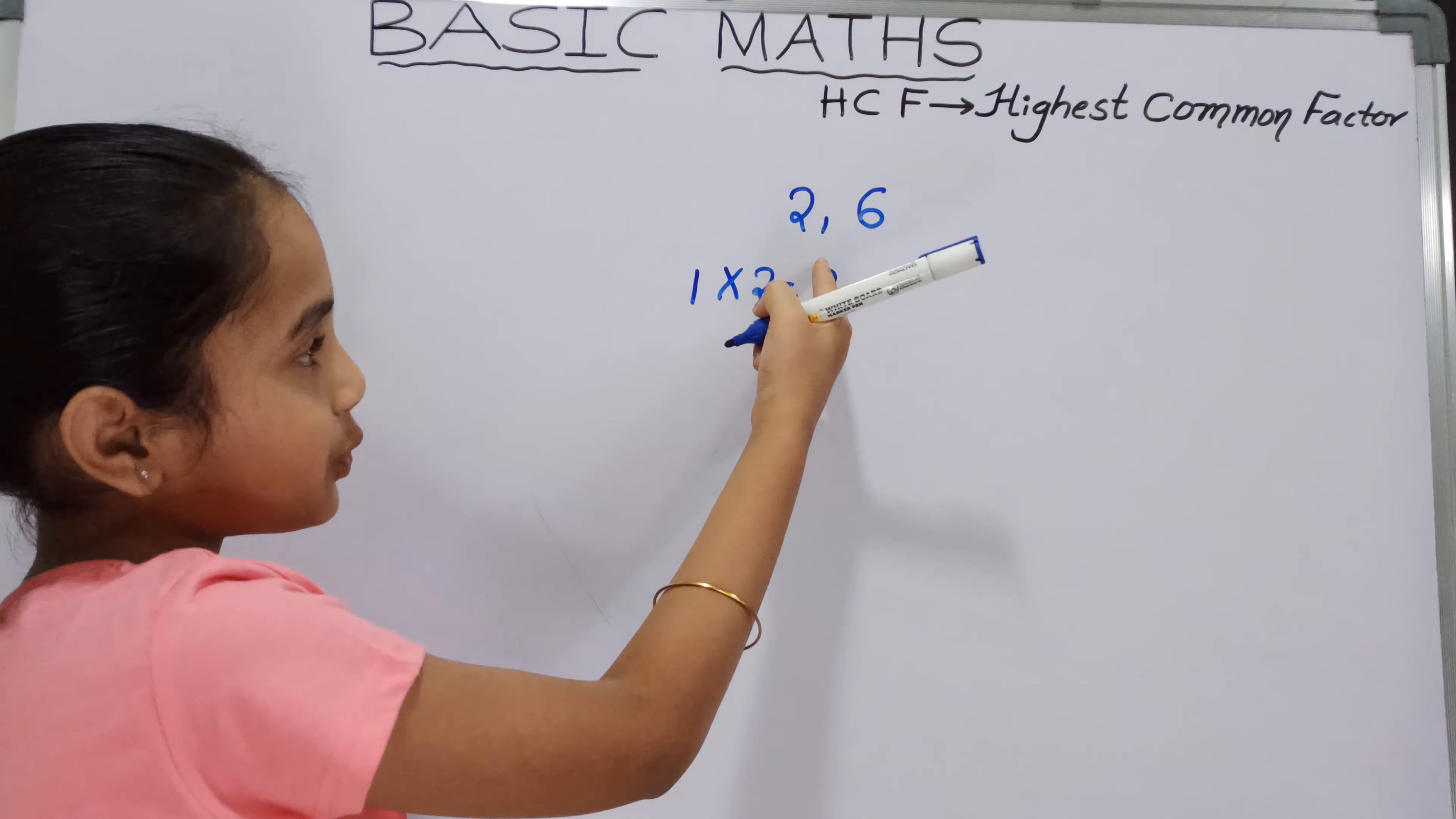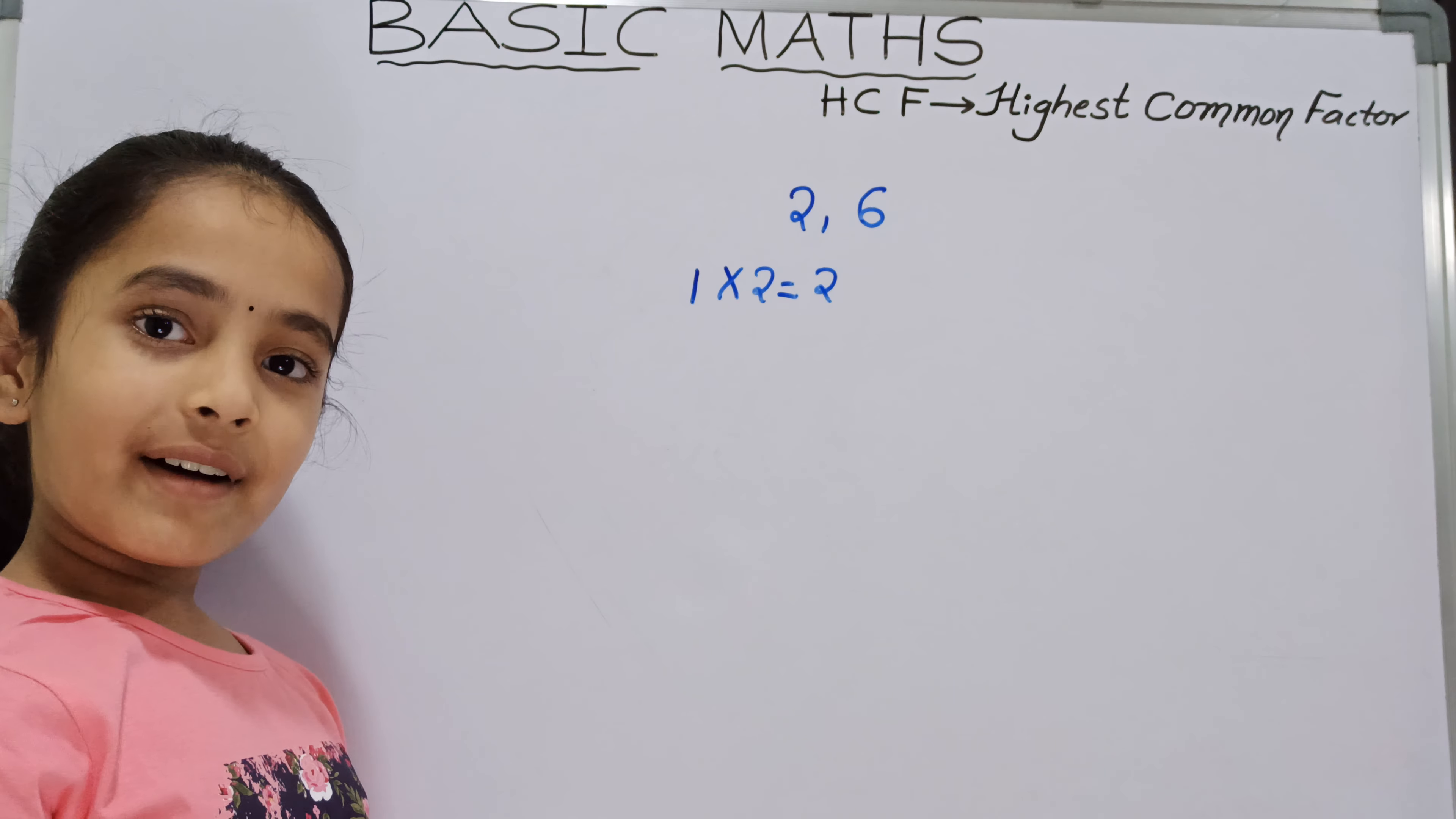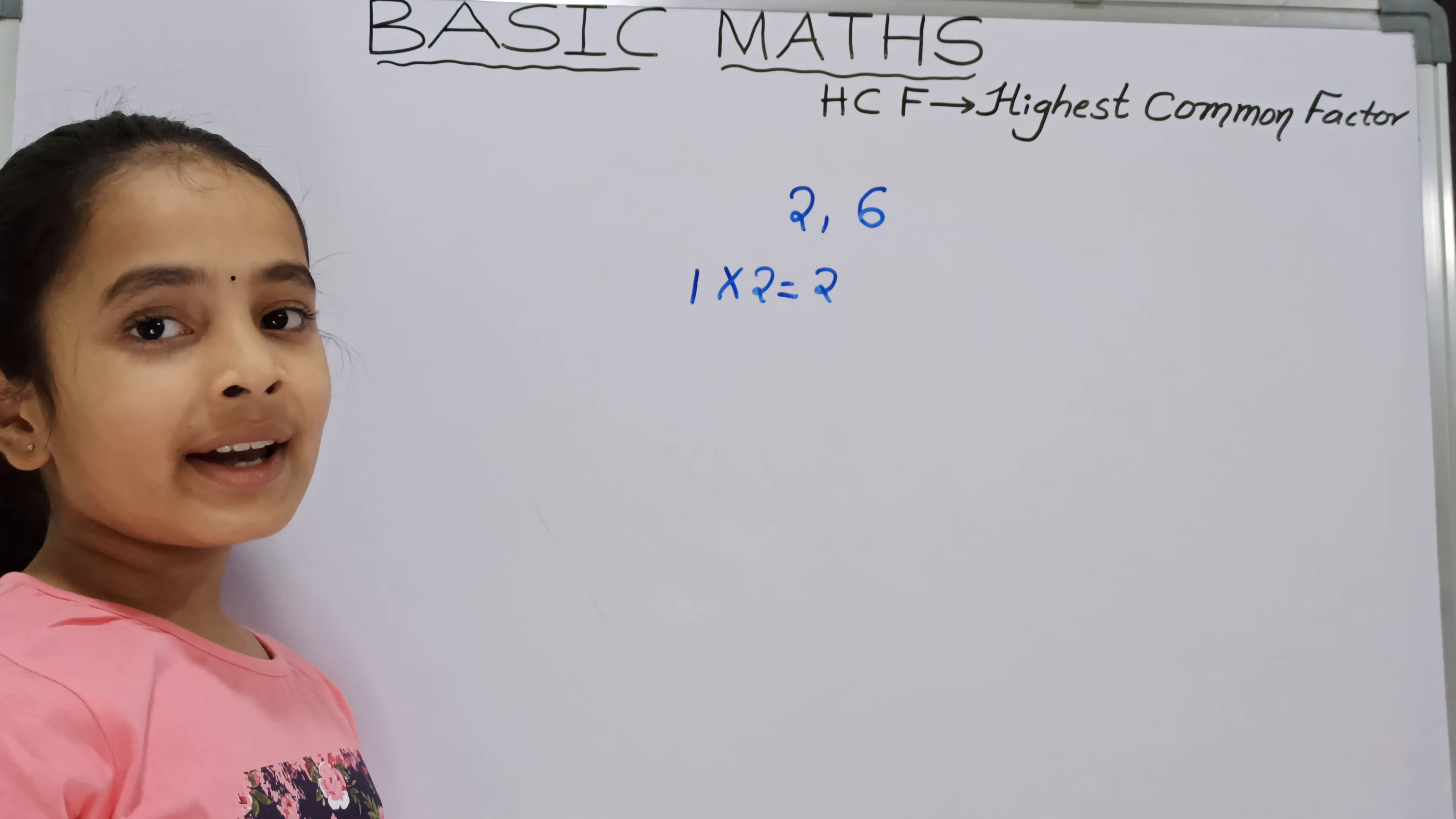We all know that 2 is a prime number. A number having only 1 and the number itself as factors is called a prime number. So we should write 2 times 1 equals 2. That's all, the factors of 2 are 1 and 2.